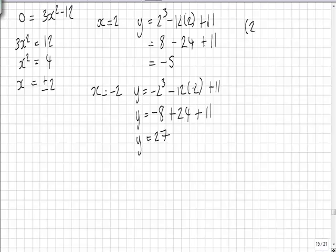So our coordinates are (2, -5) and (-2, 27). The next stage is to find the nature of these points. So what I'm going to do now is differentiate again to get d²y/dx², which gives us 6x.